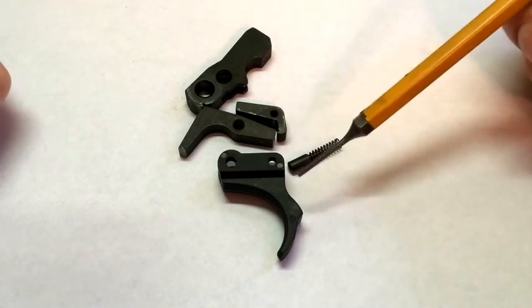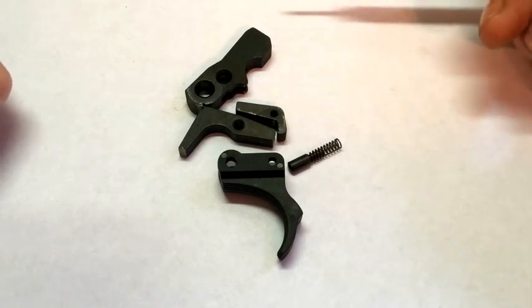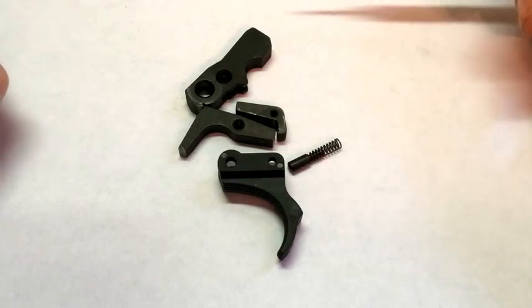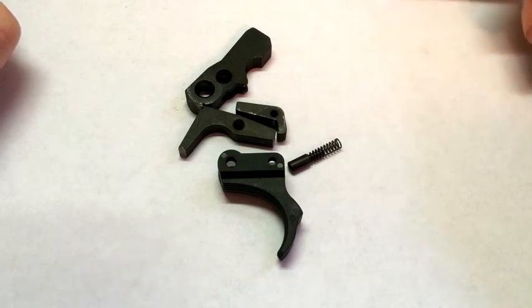You will not be able to manually push the trigger forward. When you cycle the bolt, it will spit out a perfectly good round and the gun will cycle like it's supposed to. If that is what you're having, the other video I have, titled the Ruger 10-22 trigger job fix or something like that, will tell you how to fix that problem.